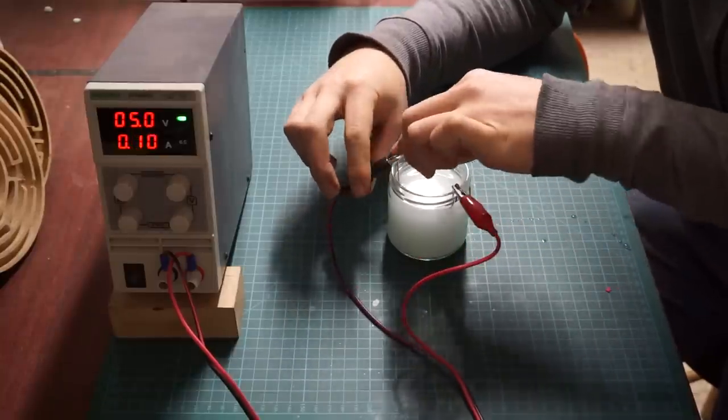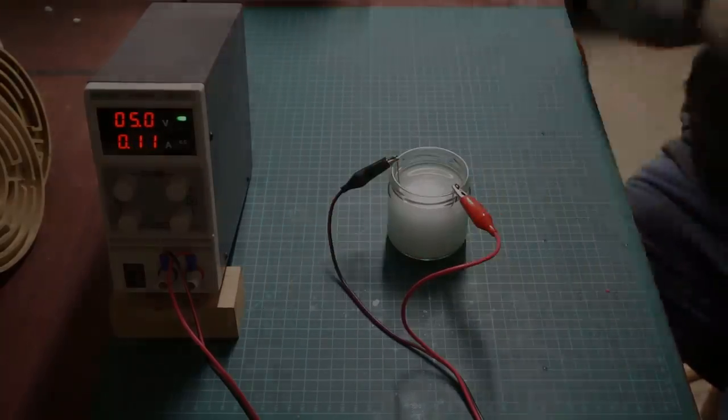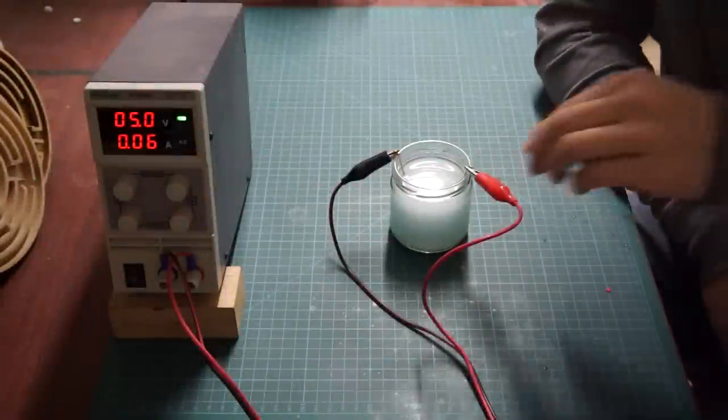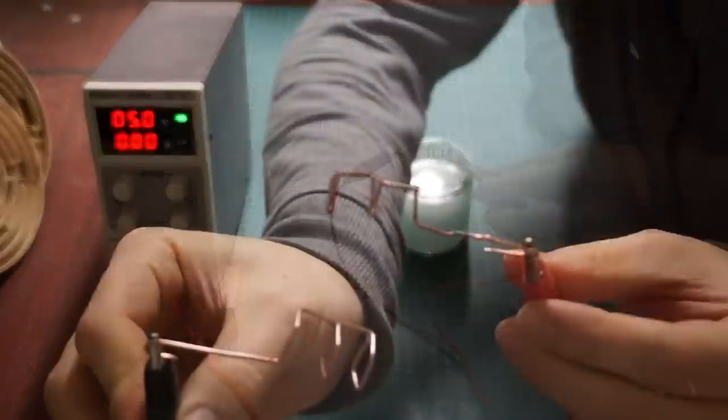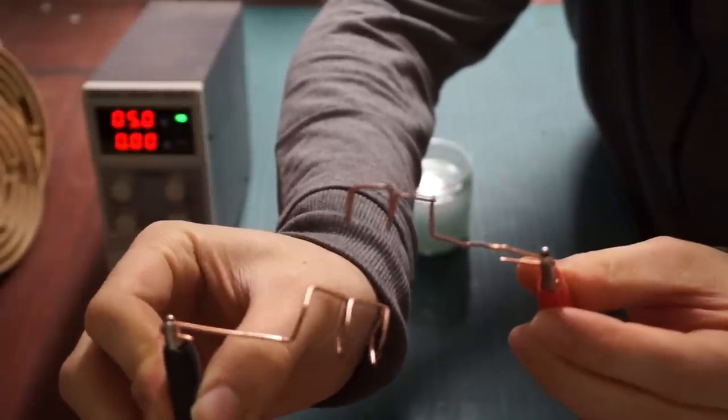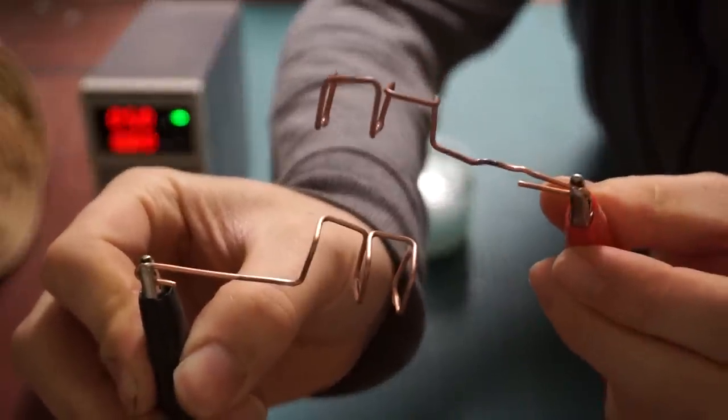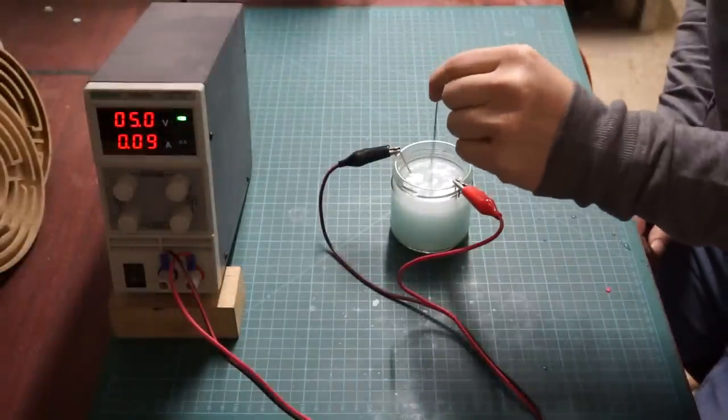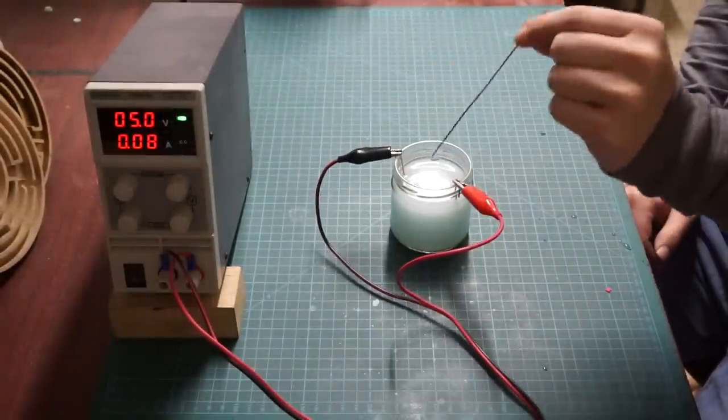As the time passed the solution went from a plain white color to a more and more bluish color indicating the copper is getting dissolved. Checking the copper anode showed increasing amounts of electrochemical corrosion. If you compare the cathode and the anode you can clearly see that the surface of the anode had gotten dull.